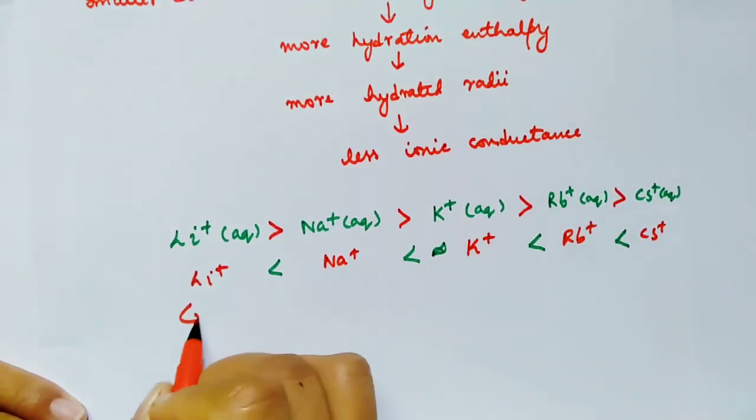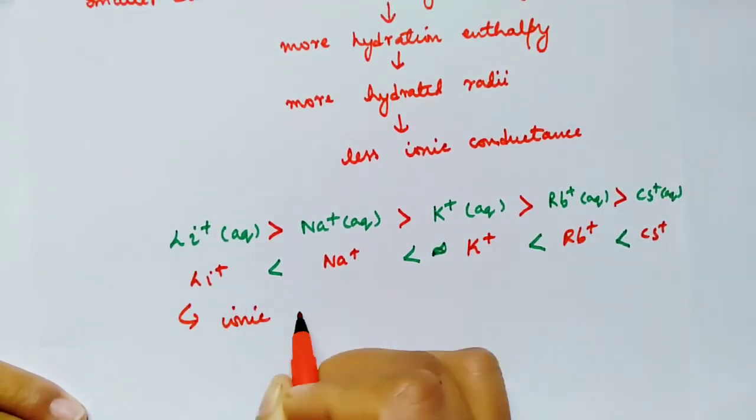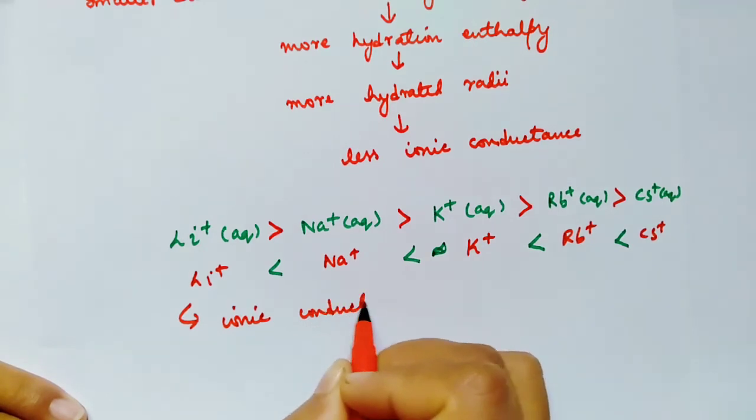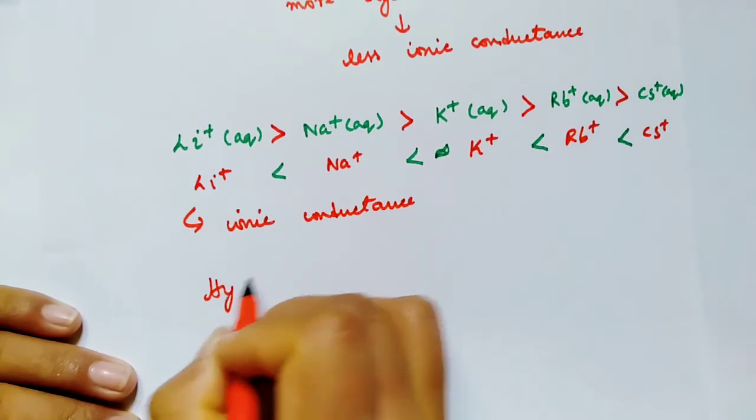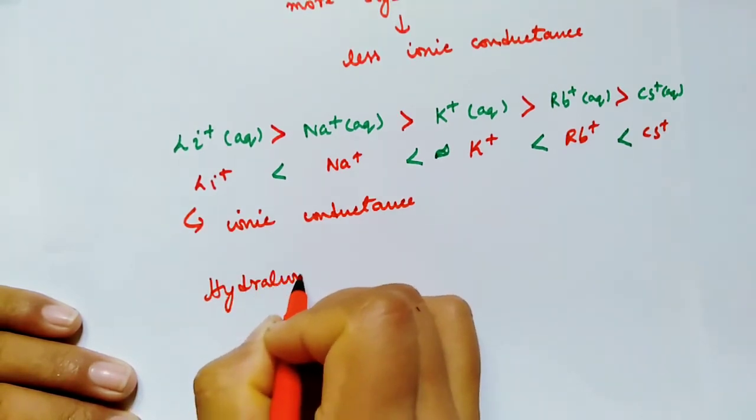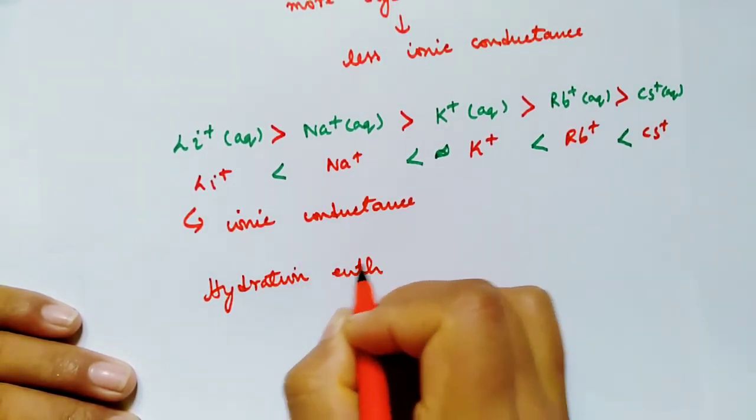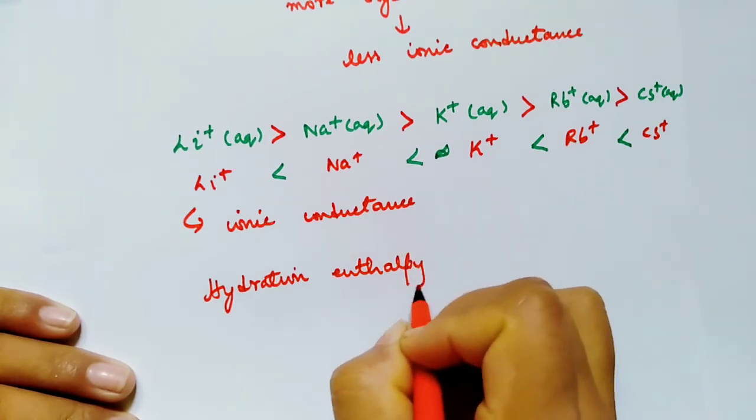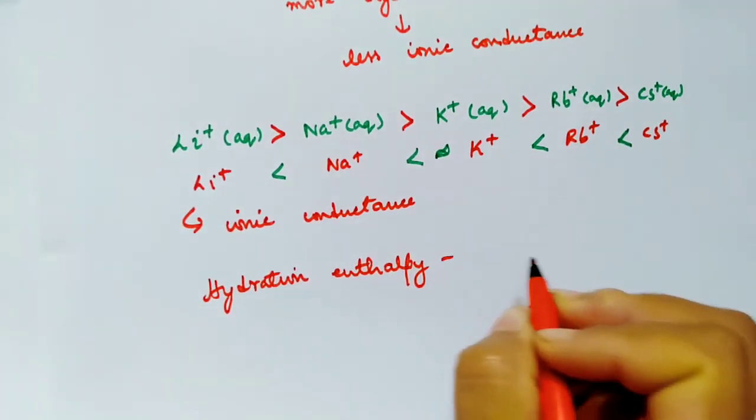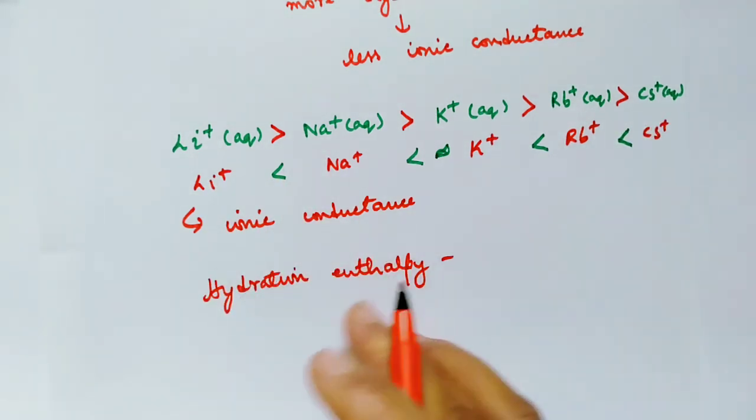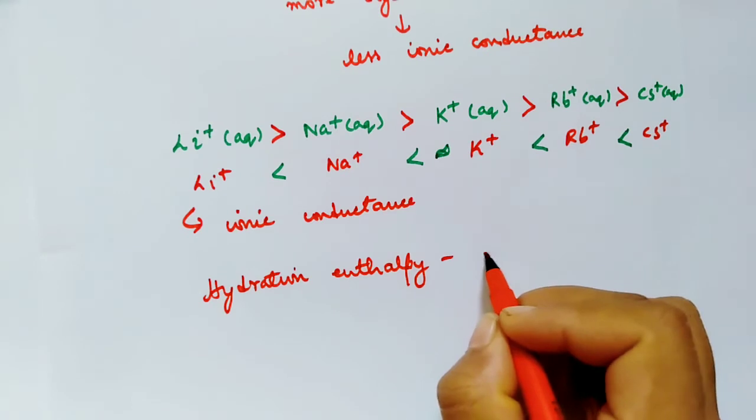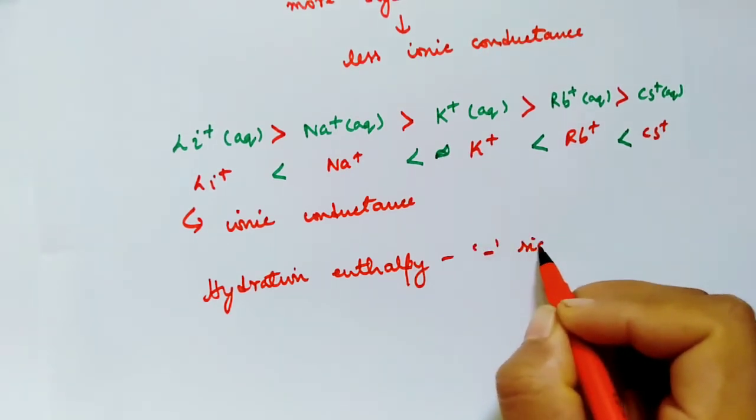As we move from lithium+ to cesium+, hydration enthalpy keeps on decreasing. The negative sign indicates that the process is exothermic.